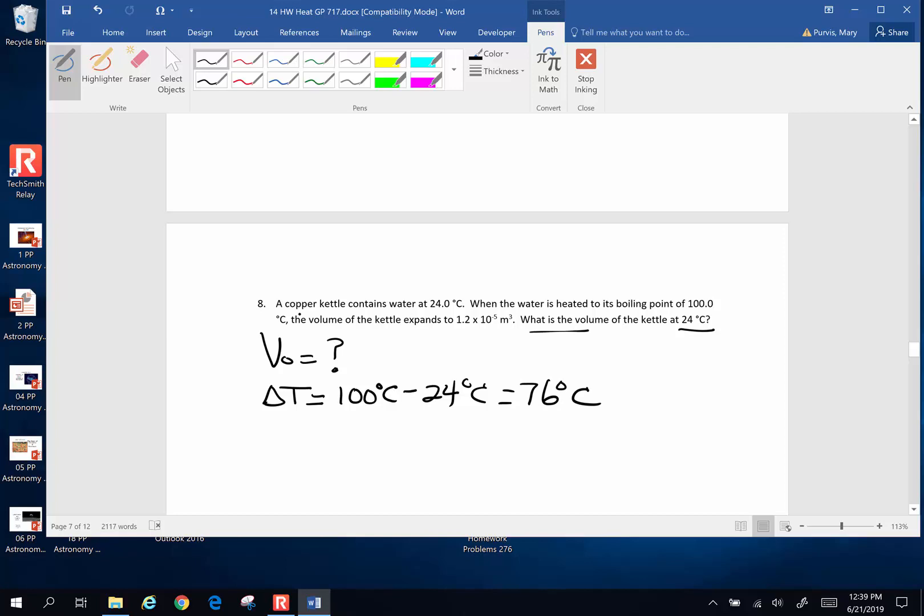It is a copper kettle. So the coefficient of volumetric expansion for copper is 51 times 10 to the negative sixth per degree Celsius. I know the volume expands by, so my change in volume is 1.2 times 10 to the negative five cubic meters. Change in volume is original volume beta change in temperature. We're solving for original volume.